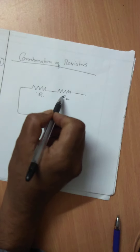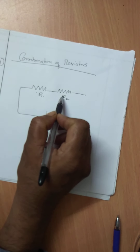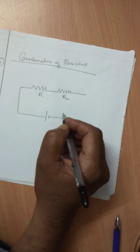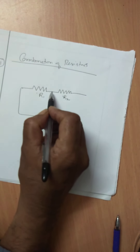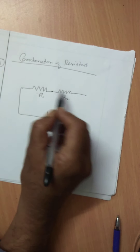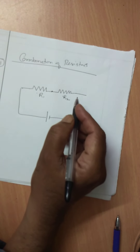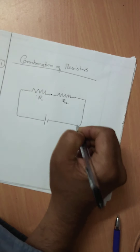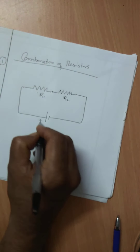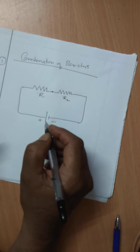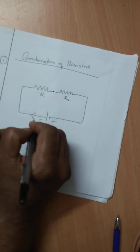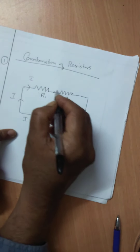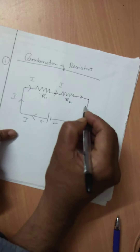Consider two resistors R1 and R2 connected in series. The resistors are said to be in series when they are connected end to end — this end to this end. There is a battery with positive and negative terminals, and the same current flows everywhere through the circuit.